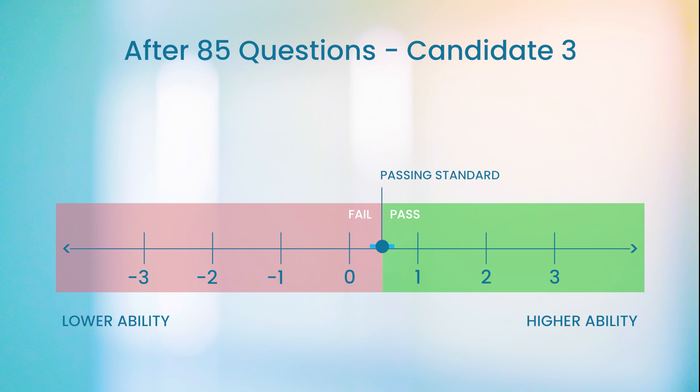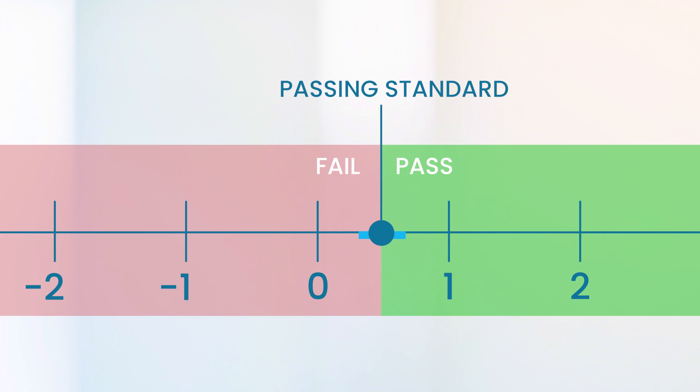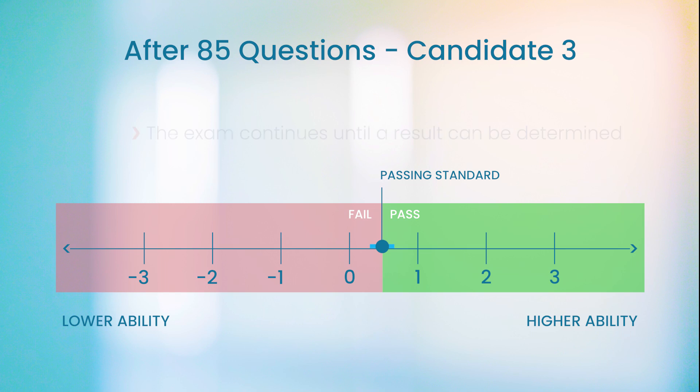Let's now look at a third candidate following 85 questions. Here, the ability estimate is right around 0.5, our pass/fail cutoff for this video, but the uncertainty of the estimate allows for an ability that might be just above or just below the passing standard. In other words, we do not yet know whether this candidate should pass or fail.